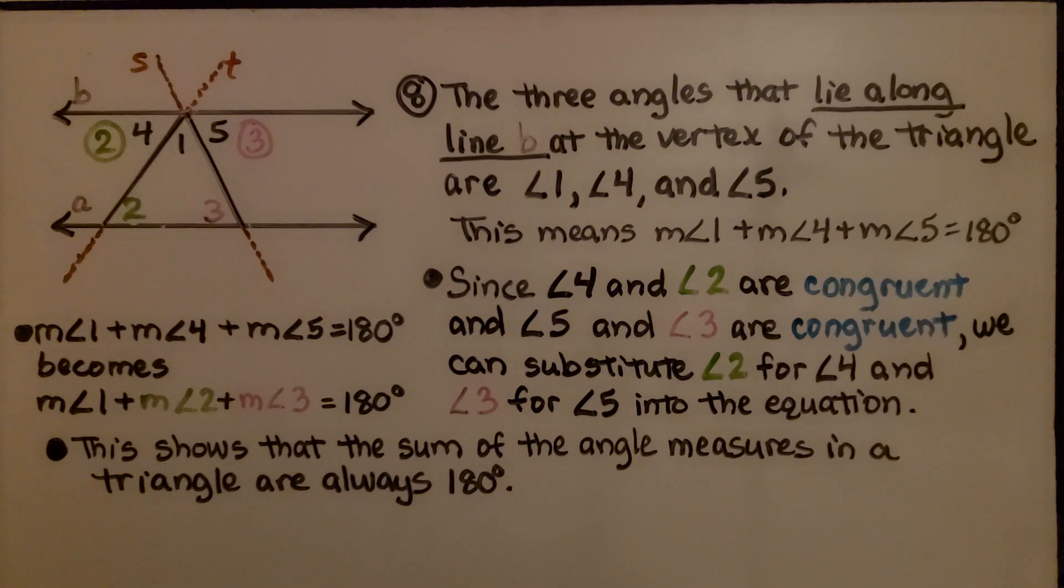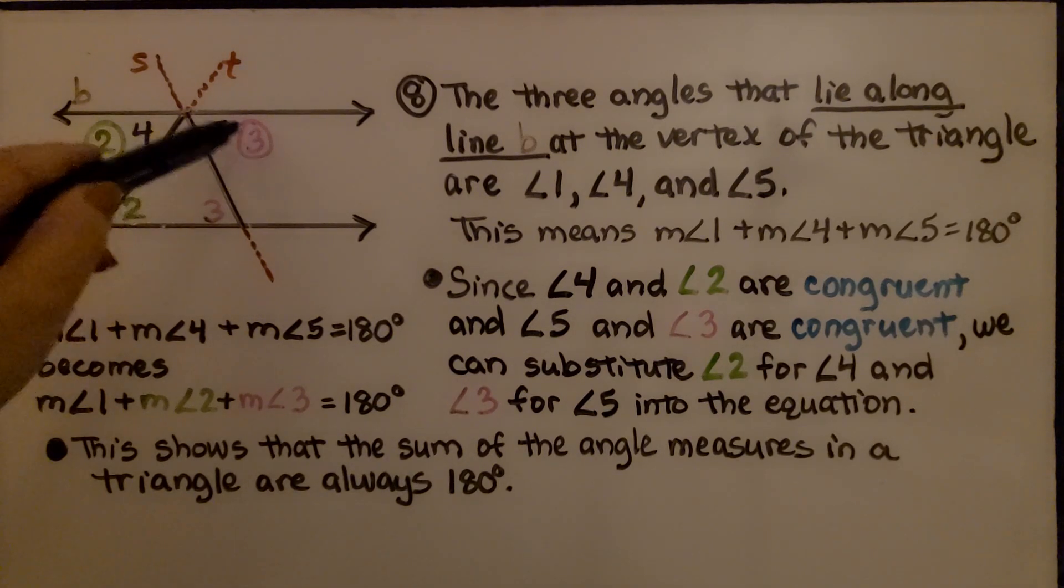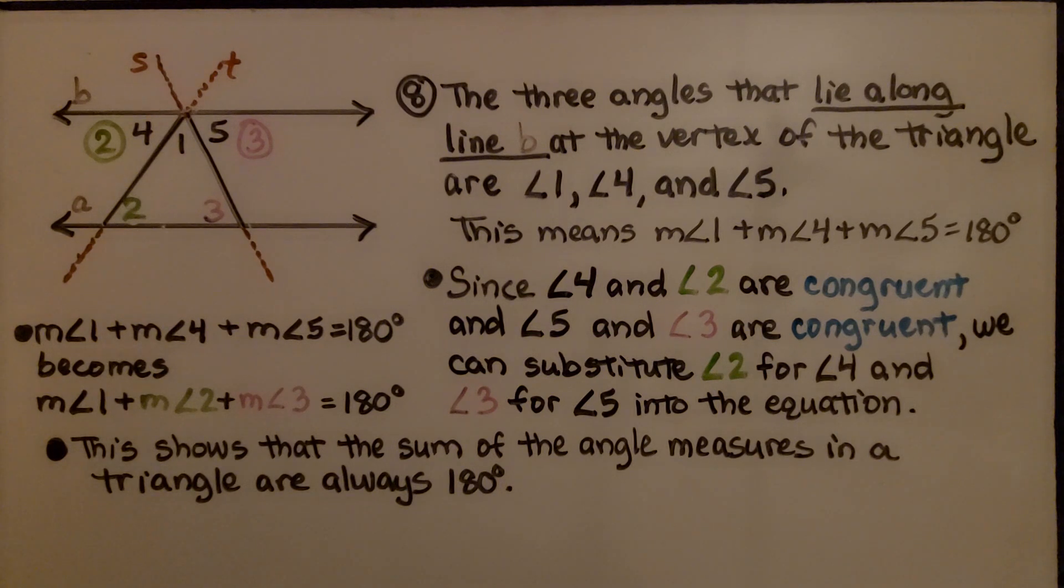Since angle 4 and angle 2 are congruent and angle 5 and angle 3 are congruent, we could substitute angle 2 for angle 4 and angle 3 for angle 5 into the equation. So before we had 4 and 5 in the equation, now we're going to put 2 and 3 into the equation.